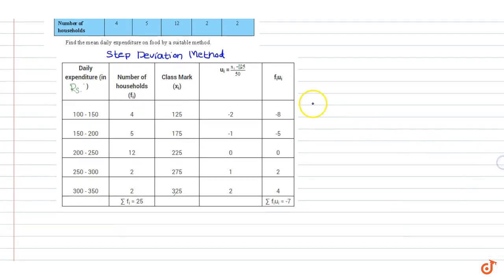Now we calculate ui. ui is calculated using the formula xi minus a divided by h where a is assumed mean. Assumed mean is the middle value of classmark, that is the middle value in this column, that is 225.